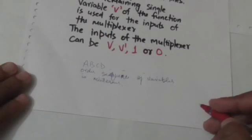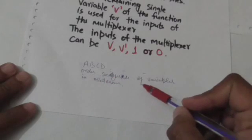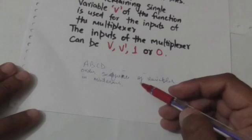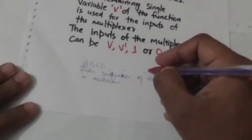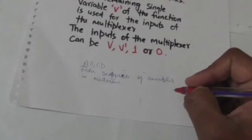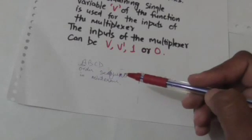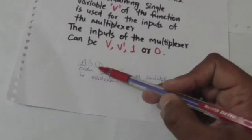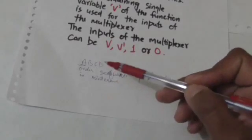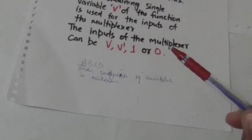Now suppose there is a boolean function of n variables a, b, c, d and so on — this is an ordered sequence of variables in minterms. Now here a is the leftmost variable and b, c, d and so on are the remaining n minus one variables which are connected to the selection lines. b will be connected to the higher order selection line, c to the next lower selection line, and so on up to the last variable connected to the lowest order selection line.